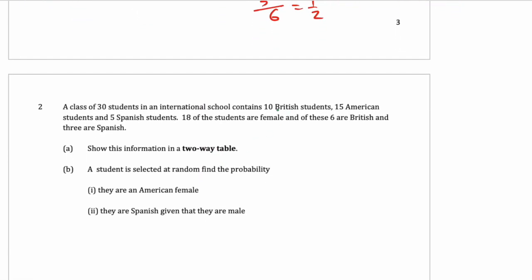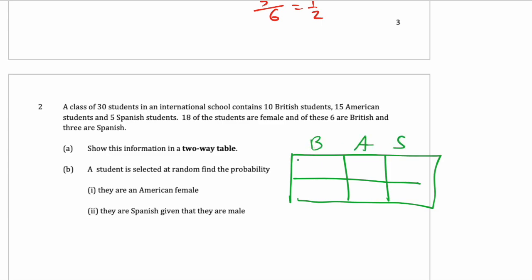Now we're going to make a two-way table. We have British, American, and Spanish students, and we have male and female, so we can make a table. There are 30 students and 10 are British. 18 of the students are female, of these 6 are British and 3 are Spanish, so 18 minus these gives 9 American females. Going back: 10 British total means 4 must be male British, so those add up to 10. The Spanish column adds up to 15, so 2 male Spanish. Double-checking: all these numbers add up to 30, so the table is filled in correctly.